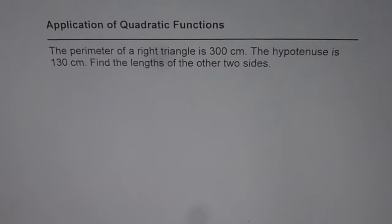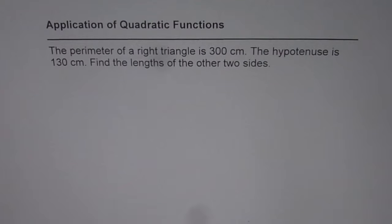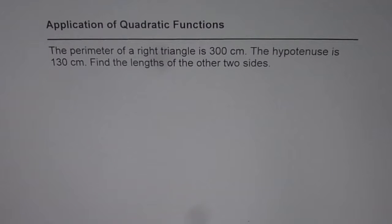I'm Anil Kumar and now let us solve some applications of quadratic functions. The perimeter of a right triangle is 300 centimeters. The hypotenuse is 130 centimeters. Find the length of the other two sides.